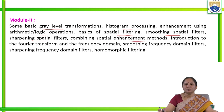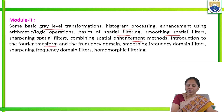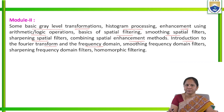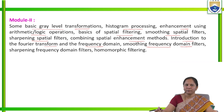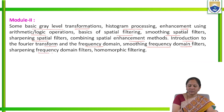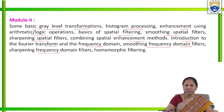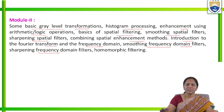Next is combining spatial enhancement methods — by combining all these, how the effect will be. Then, introduction to the Fourier transform and frequency domain: what is meant by frequency domain, and how image enhancement will be done in frequency domain. Under smoothing frequency domain filters, we will learn low pass filter and its categories like ideal low pass filter. Under sharpening frequency domain filters, we will learn about high pass filter — ideal high pass filter, Butterworth high pass filter, and Gaussian high pass filter.